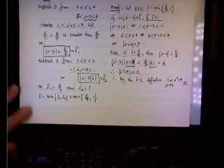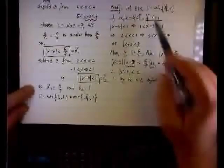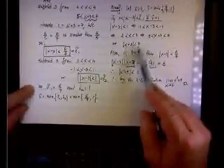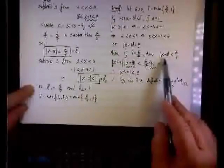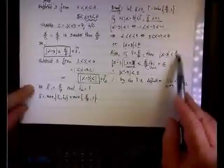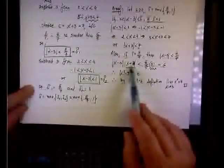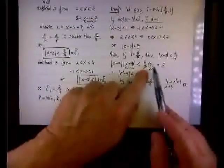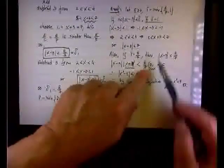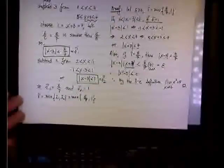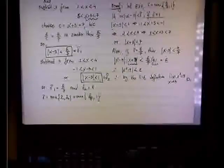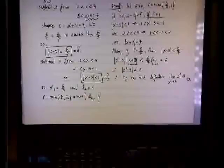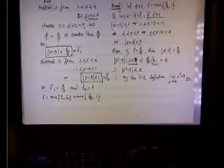So we conclude the formal proof. We used both deltas: with delta equals 1 we showed the absolute value of x plus 3 is less than 7; with delta equals epsilon over 7 we showed x minus 3 is less than epsilon over 7. Multiplying those together gives x squared minus 9 less than epsilon over 7 times 7, which is epsilon. That's the key trick when you have to factor — this is a higher level of difficulty, but it's an important example to see.